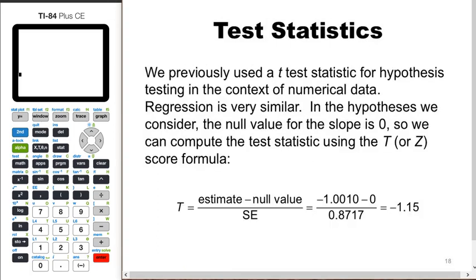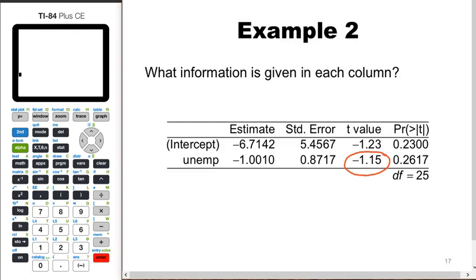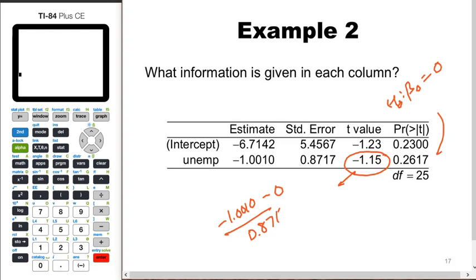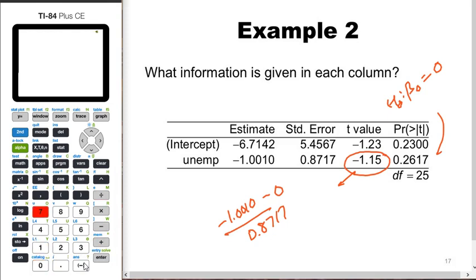The test statistic is negative 1.155. That comes from taking the estimate, reading off the negative 1.0010, minus the null value of zero, divided by the standard error of 0.8717. Putting that into your calculator: negative 1.0010 minus zero, divided by 0.8717, gives you negative 1.15 — that's the test statistic.